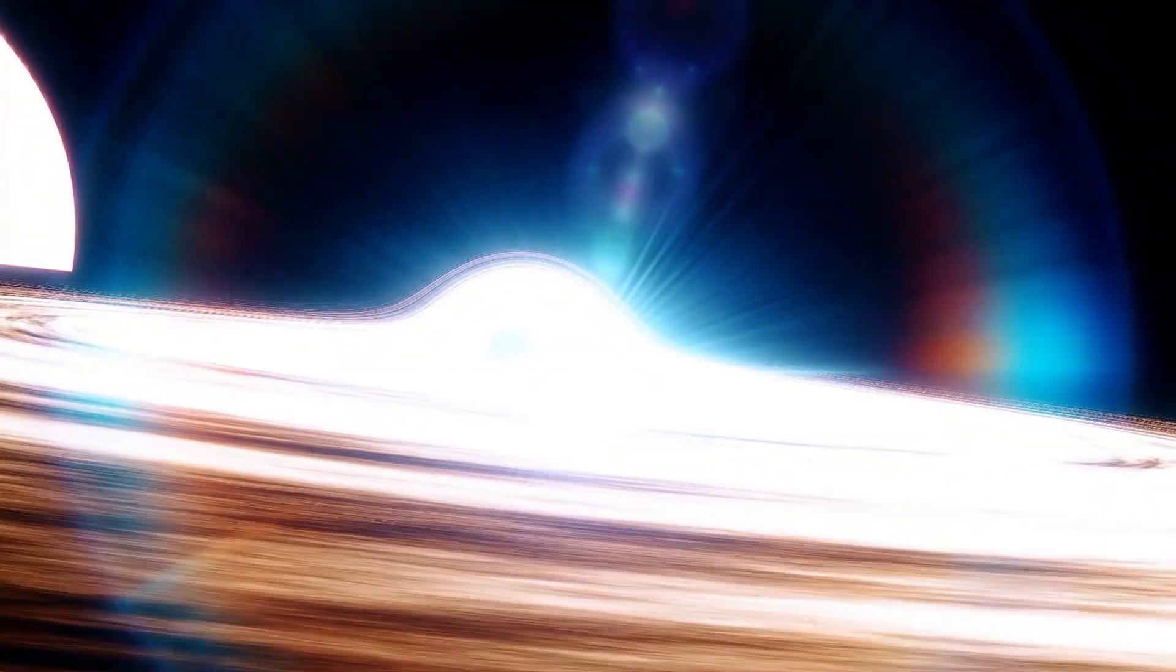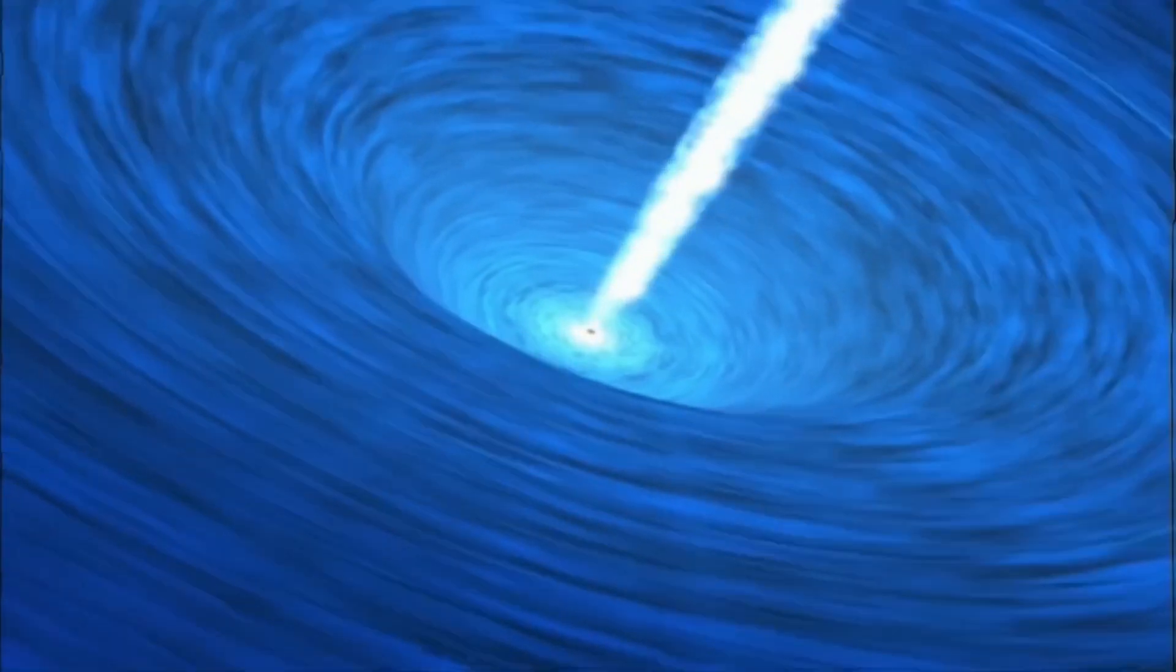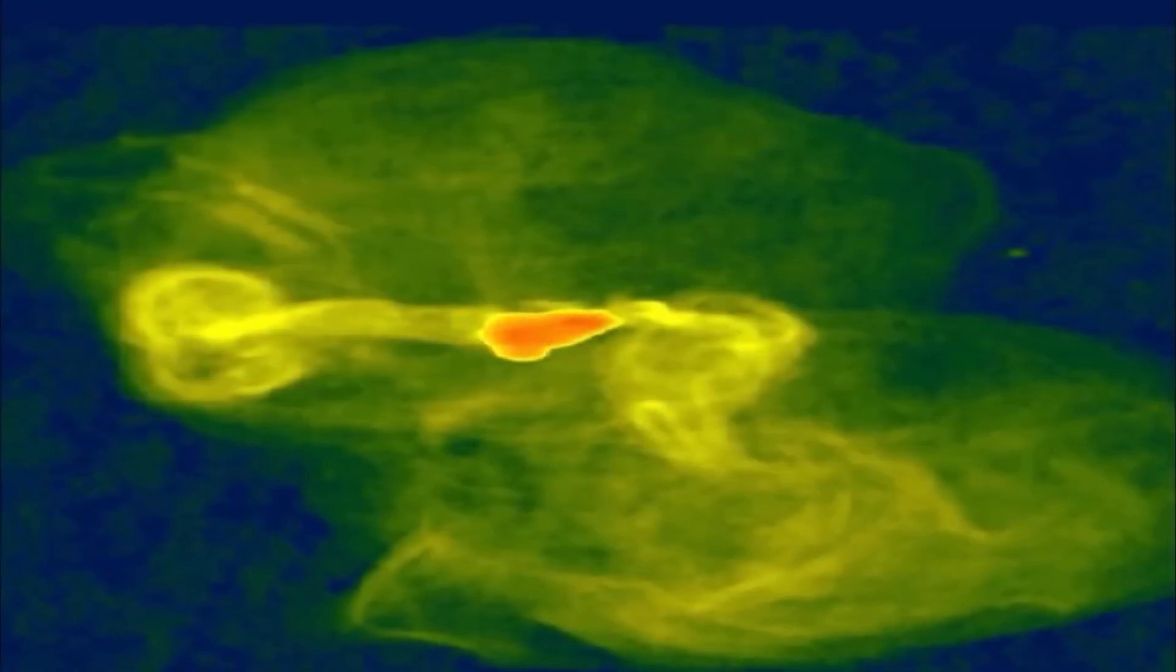The distinguishing feature of a white hole is that it only allows matter and energy to flow outward. Nothing can cross its event horizon from the outside to the inside, which distinguishes it primarily from black holes.